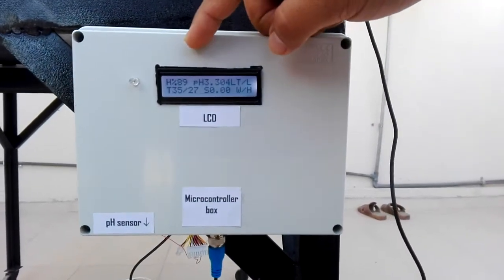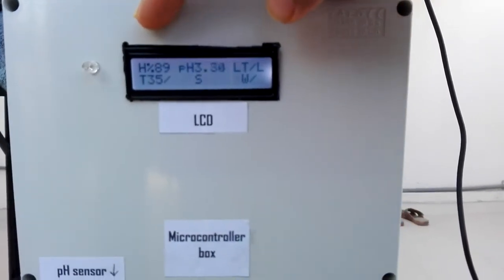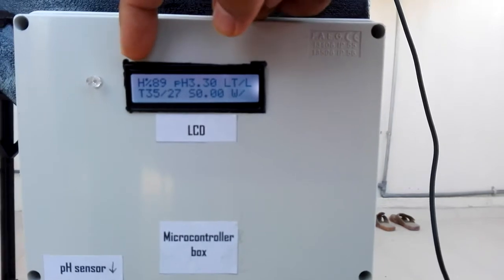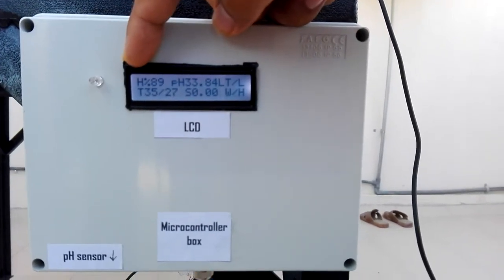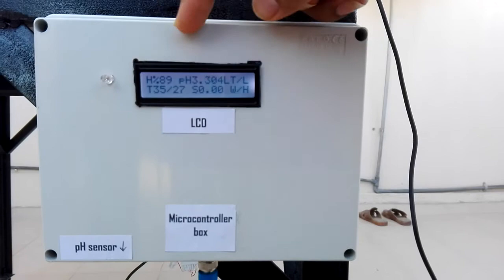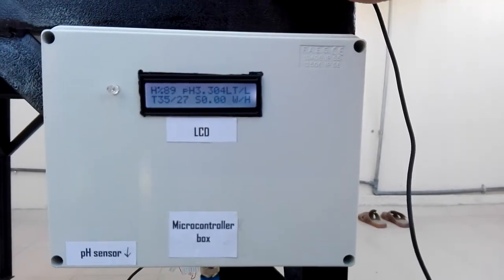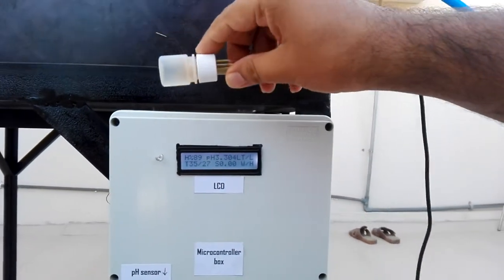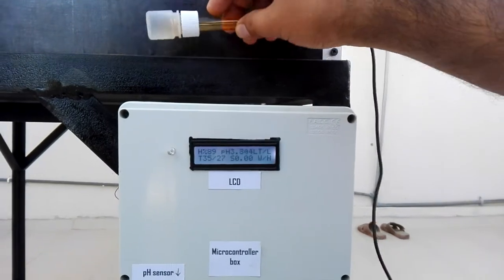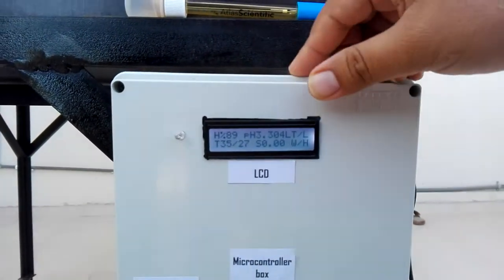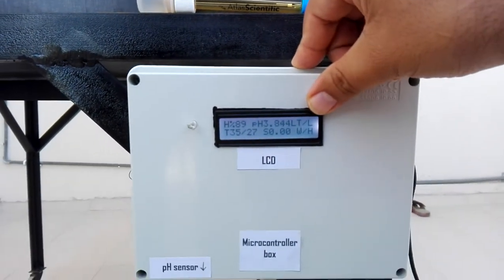As you can see here in the LCD, on the first row where I have pointed my finger, it's humidity that is inside - 89%. We have a pH meter and this pH meter basically shows the quality of the water. We didn't dip it at the moment.